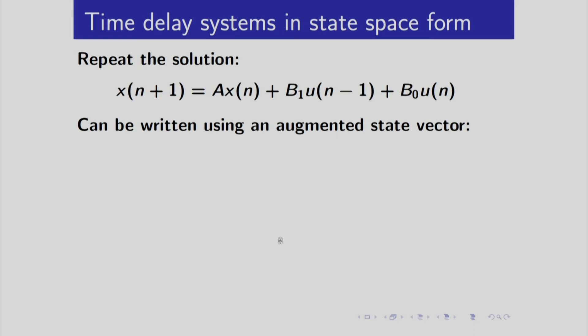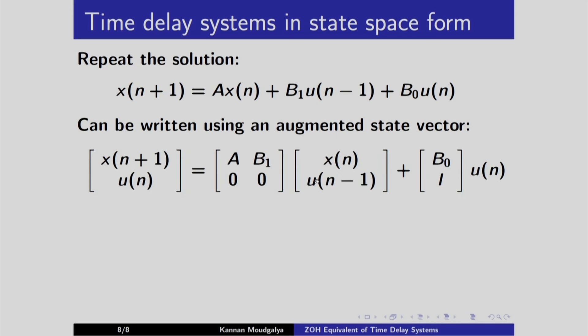So we consider that in this slide. It turns out that it is indeed possible to do this. We form an augmented state vector as follows. As I mentioned in the previous slide, you remember u of n minus 1 also along with x of n. This is the value of the input taken during the previous interval. So this is augmented state x of n, this is augmented state x of n plus 1.